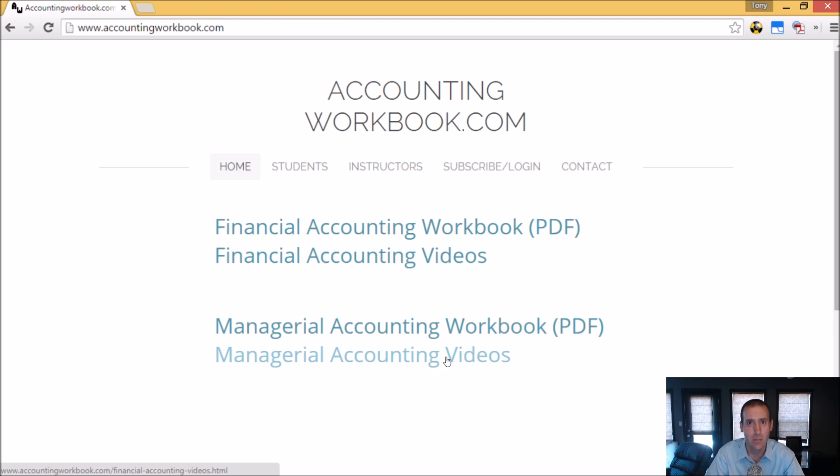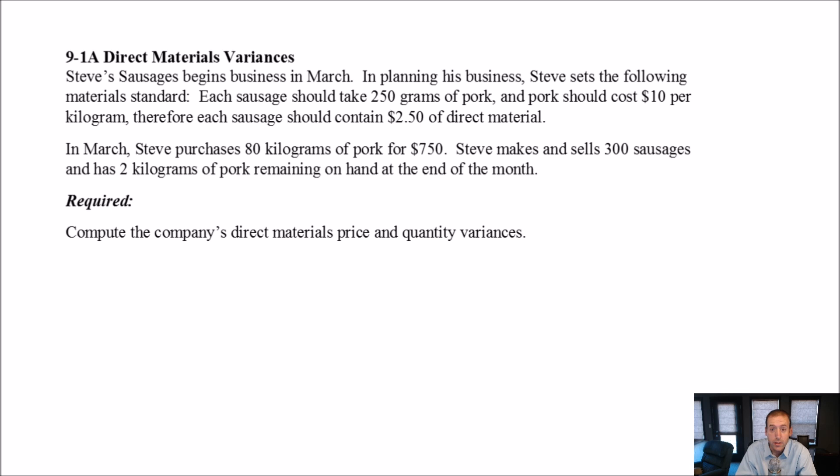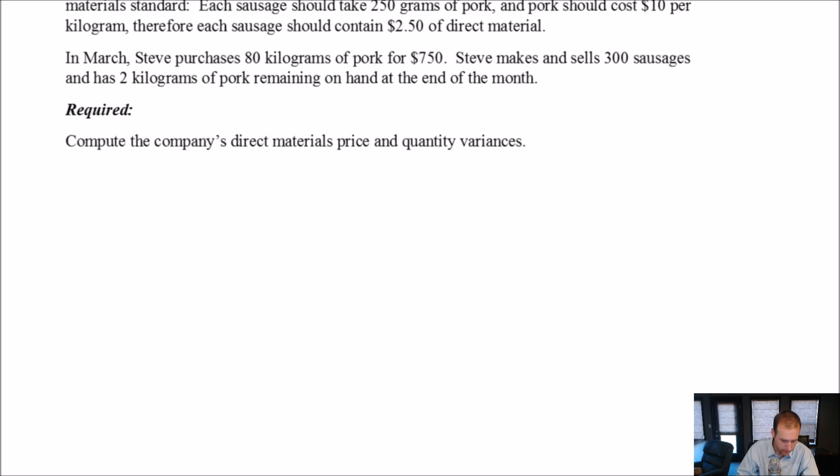Okay, let's get started with the problem. Let's take a look at 9.1a, direct materials variances. So when I know I'm doing a variance question, and this one tells me direct materials, I immediately draw this chart. Even before I do the question, I think to myself, I know I'm going to do variances, so this is going to come in handy. And I just want this to be second nature to you.